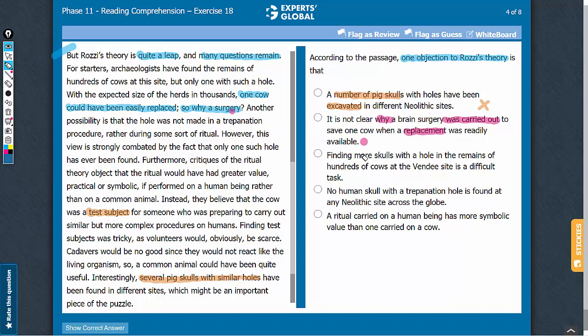Answer choice C: Finding more skulls with a hole in the remains of other cows is a difficult task. The passage mentions that archaeologists have found the remains of hundreds of cows but only one with such a hole. Although it can be inferred that finding a cow skull with a hole is a difficult task, that is not the objection raised here. The objection raised here is that if the cow could have been easily replaced, why was a surgery conducted? So this answer choice can be eliminated.